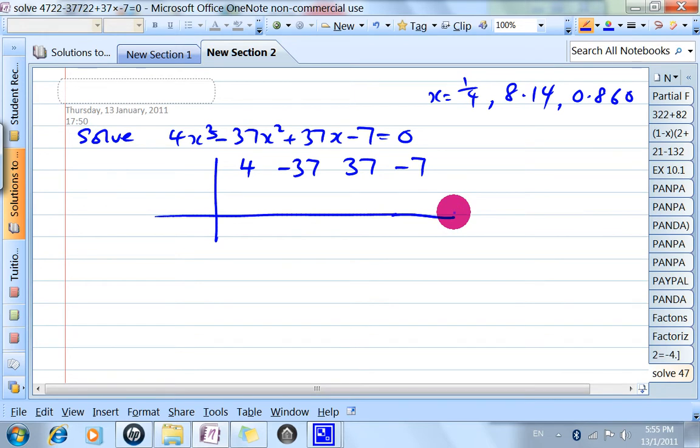Bring down the 4, multiply to get 1, add to get -36, multiply to get -9, add to get 28, multiply to get 7, remainder 0.